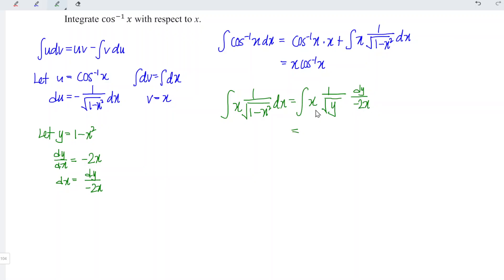Let's simplify. So we have x cancel with x. For constant negative 2, then negative 2 and y we can take out. So we have negative 1 over 2 outside, and we just have to integrate y.